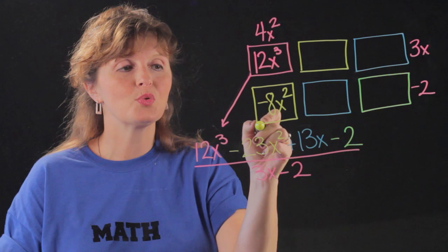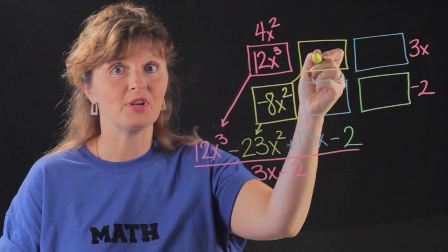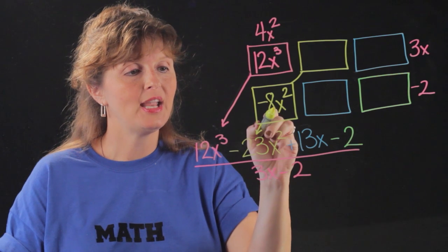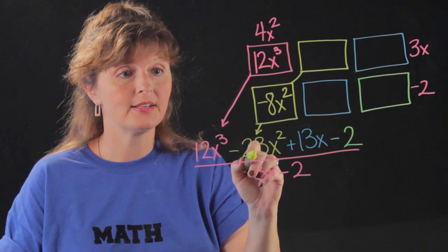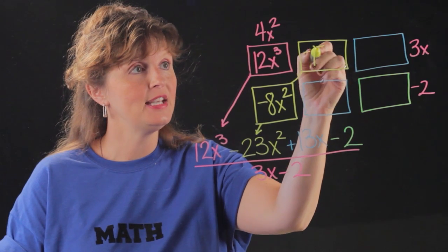Then I look at this and 4x² times -2 gives me -8x². But this -23x² needs to be these two put together. So -8x² plus what gives me -23x²? -15x².